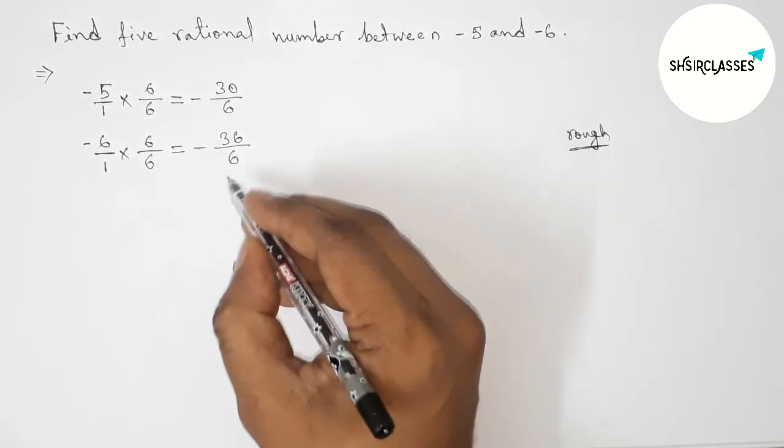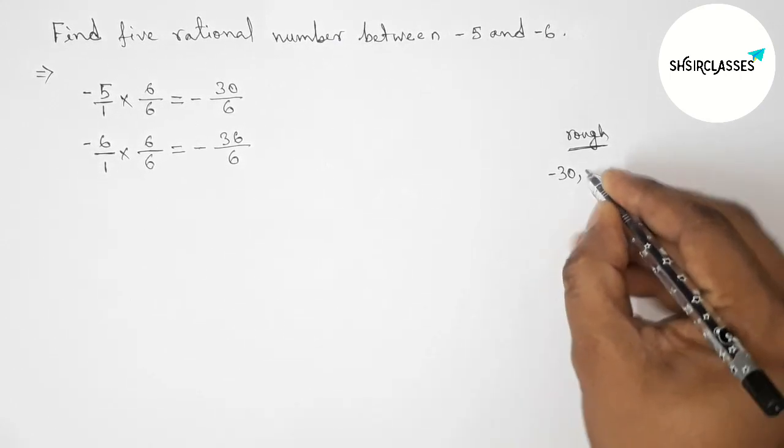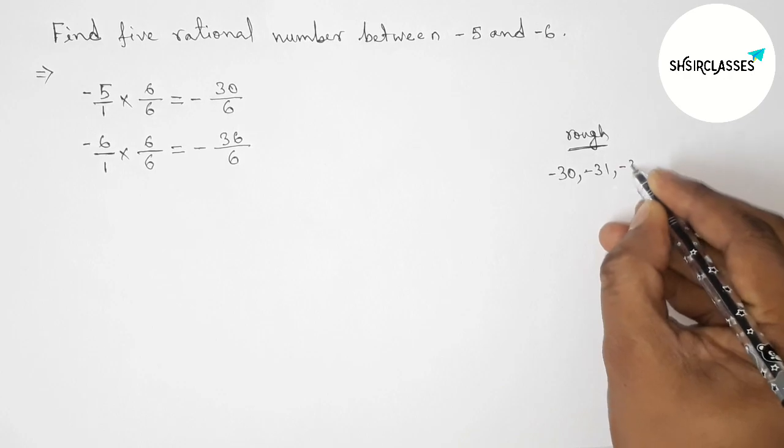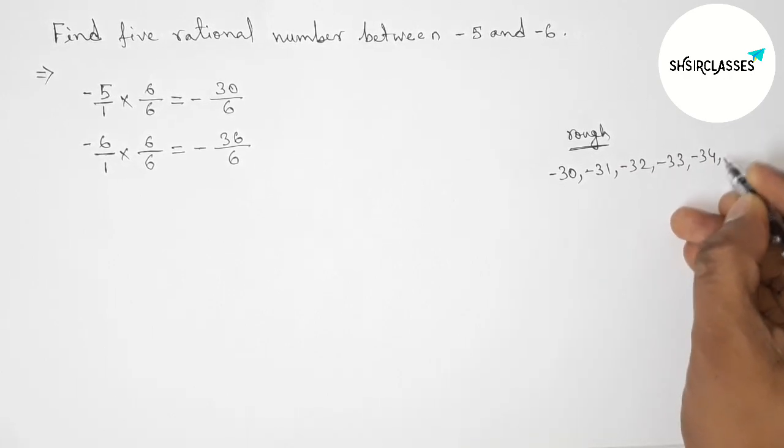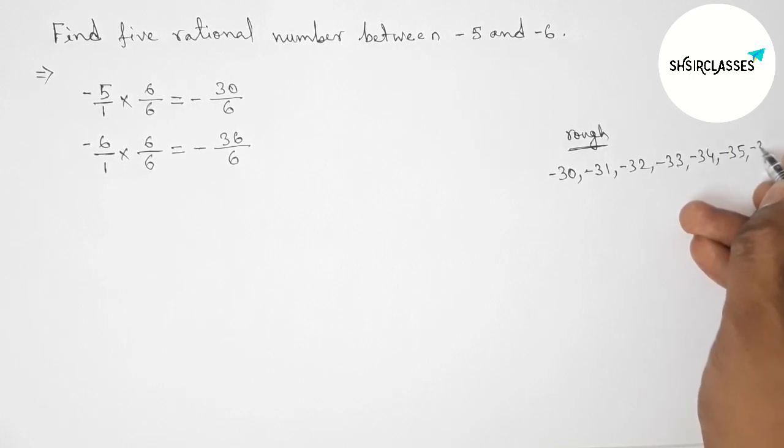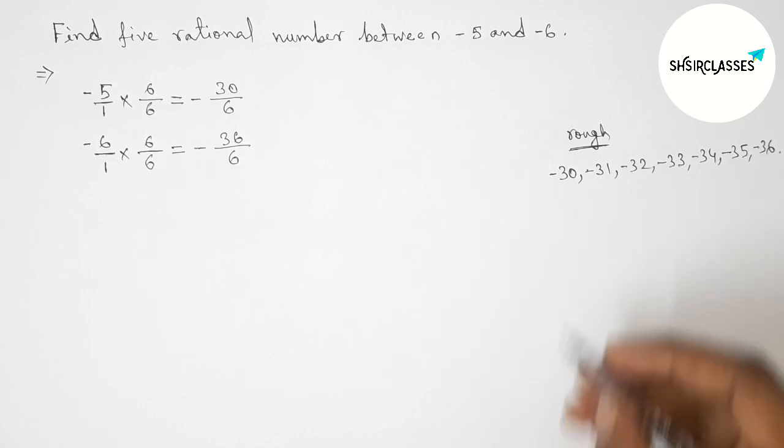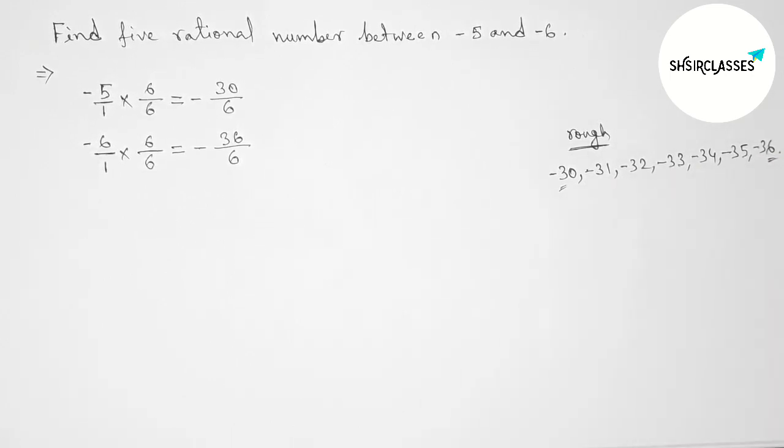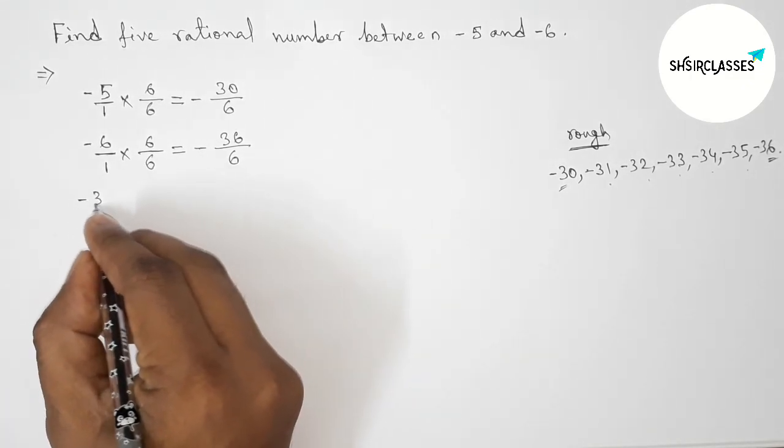Both the denominators are the same. Between minus 30 and minus 36, we can get 5 negative integers. Between minus 30 and minus 36, these are 5 negative integers. Now let's form all the rational numbers.